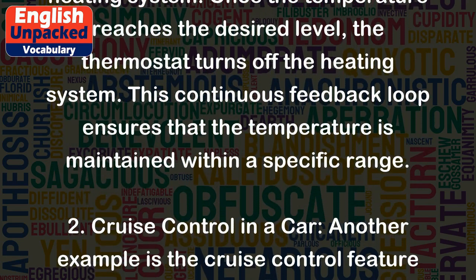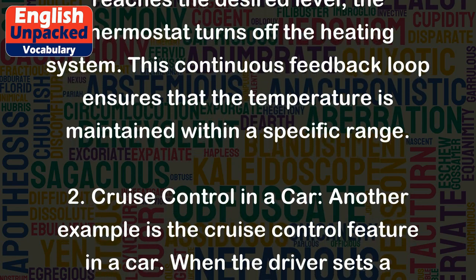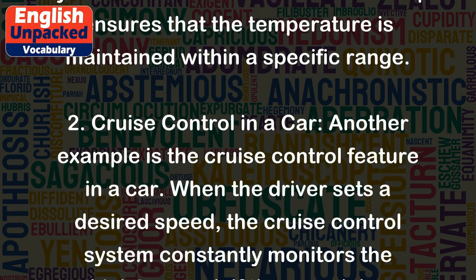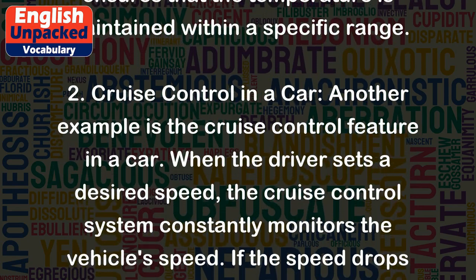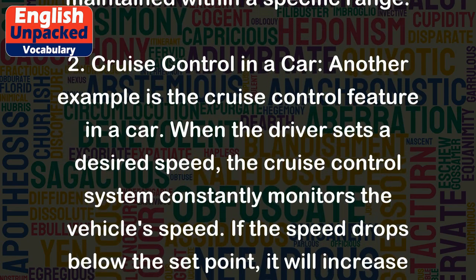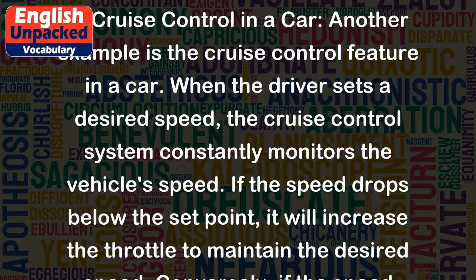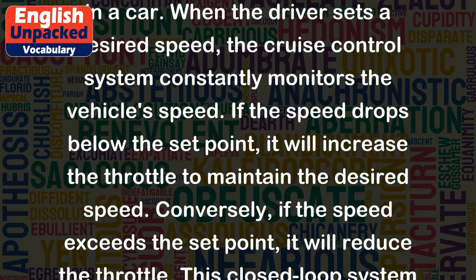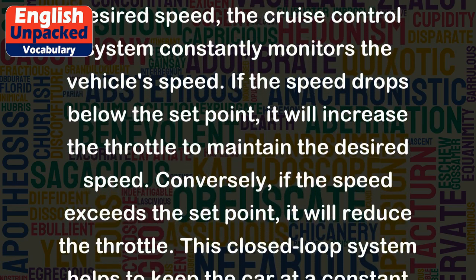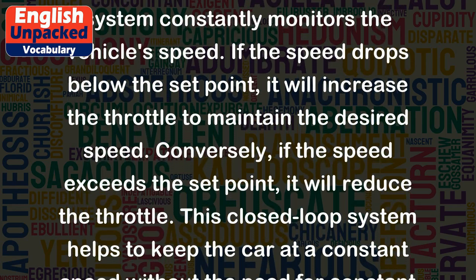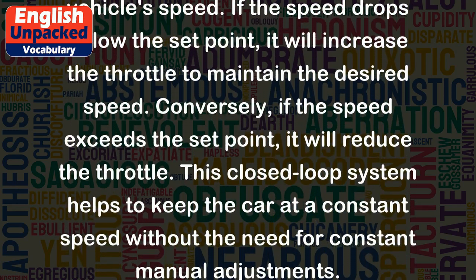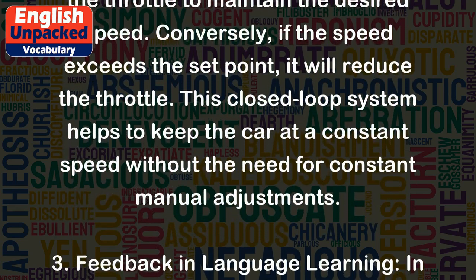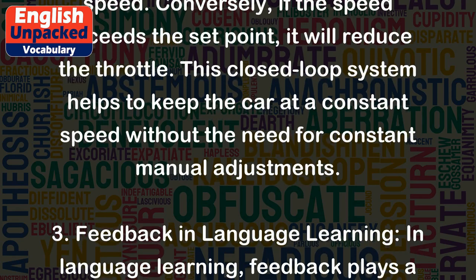Example 2: Cruise control in a car. Another example is the cruise control feature in a car. When the driver sets a desired speed, the cruise control system constantly monitors the vehicle speed. If the speed drops below the set point, it will increase the throttle to maintain the desired speed. Conversely, if the speed exceeds the set point, it will reduce the throttle. This closed loop system helps to keep the car at a constant speed without the need for constant manual adjustments.